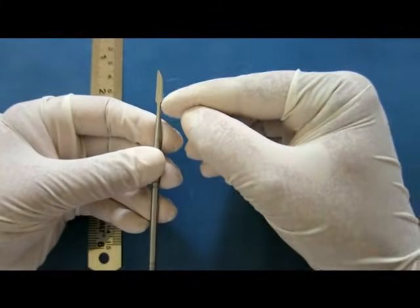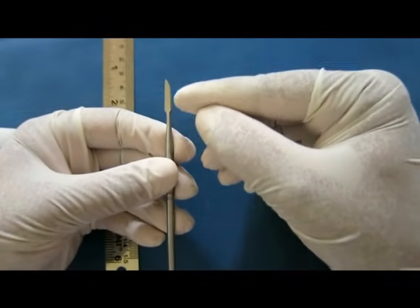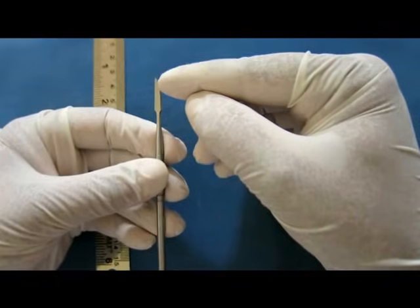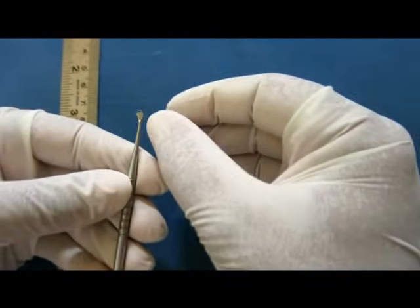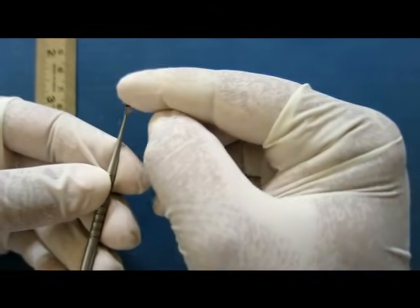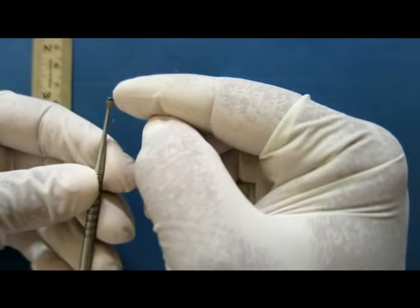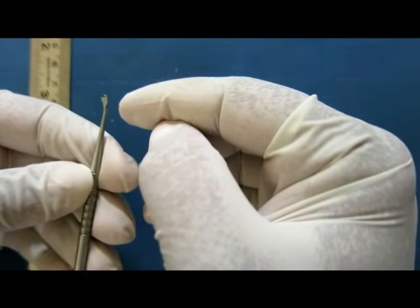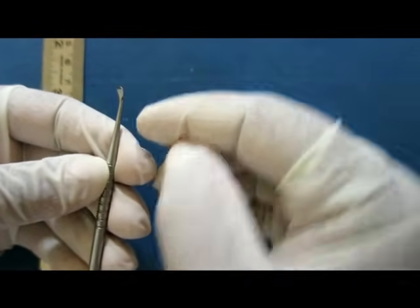This is the straight part of the working end, and this is the curved part. For most purposes, we use the straight part, while the curved part is often used for occlusal carving. The spoon-shaped working end has a sharp edge and is used for carving occlusal grooves and the lingual fossa.